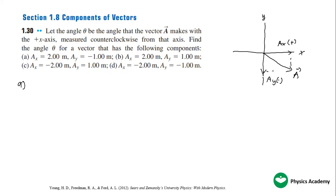Find the angle theta for a vector that has the following component. We define that the angle must be from the positive x-axis theta. That's what we're going to find. For letter A, we're going to use the tangent.